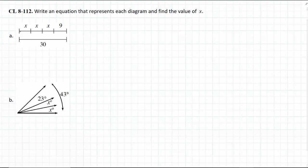Okay, well this one we know that this line is equal to this line, so I know we have 3x's and then plus 9 is going to equal 30.